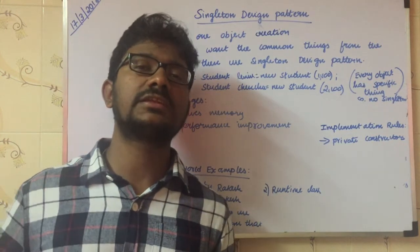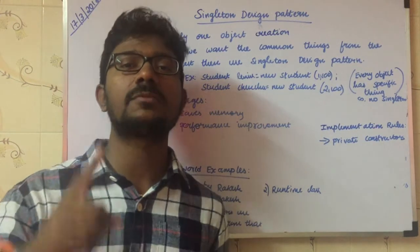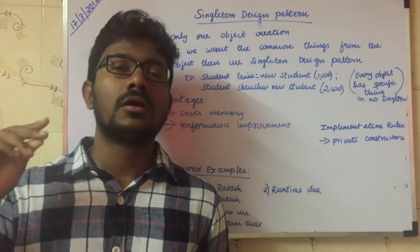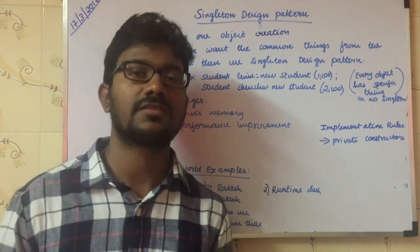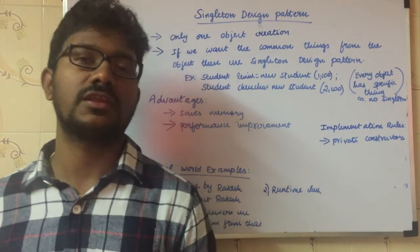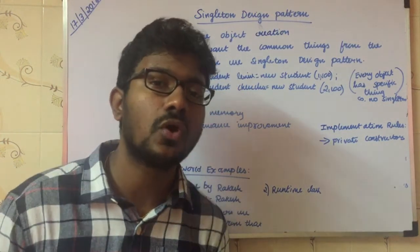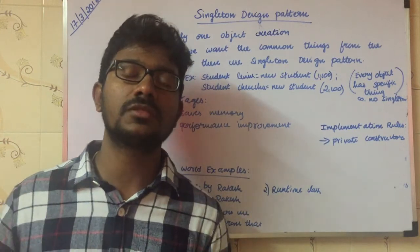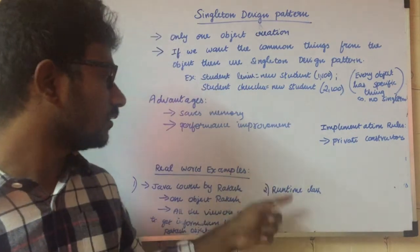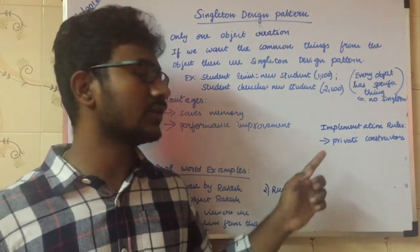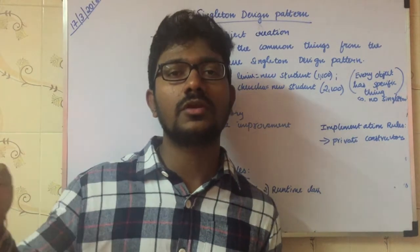Java has many Singleton implementations. One important example is the Runtime class. The Runtime class is a Singleton design pattern implementation — only one object is created for the JVM, and you can use it any number of times. If you try to create a new object, it gives you the already-created object. This is a real-time use case where Java uses the Singleton design pattern.